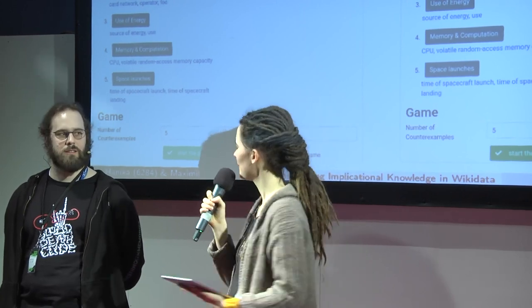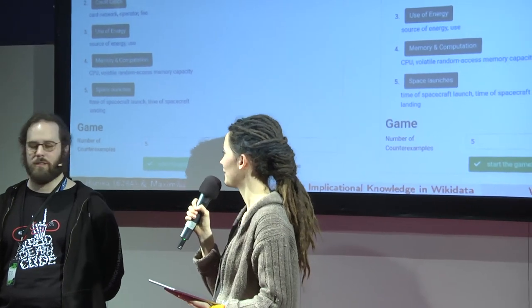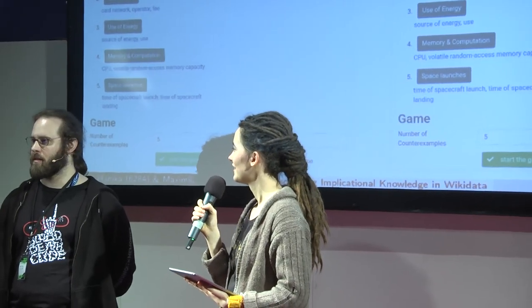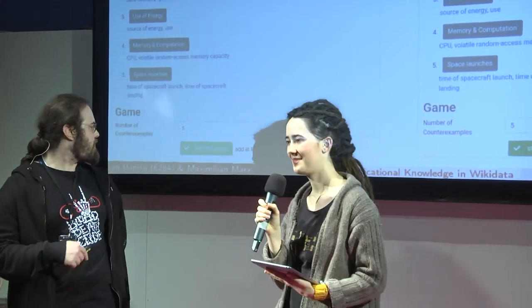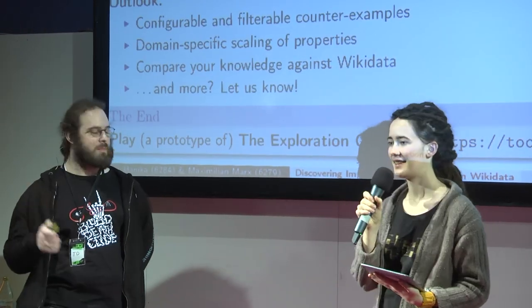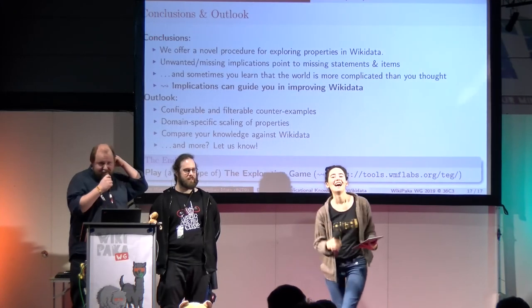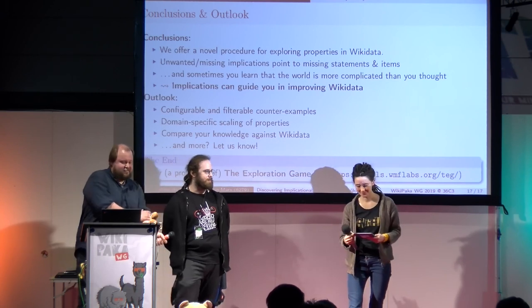We're perfectly on time. You can find Tom and Max at the couches behind the stage, or running around somewhere. Our badge numbers are 6284 for Tom and 6279 for Max — just call and ask where we're hanging around. Thank you again — have a round of applause.